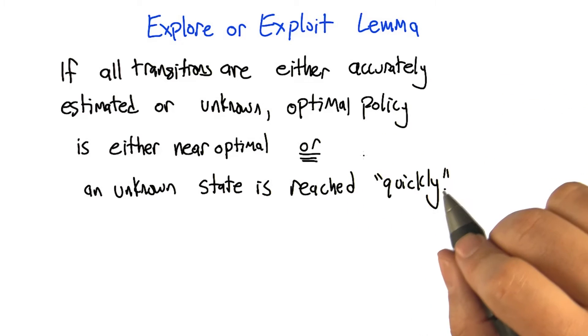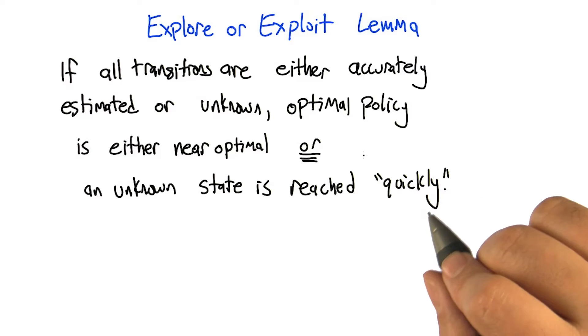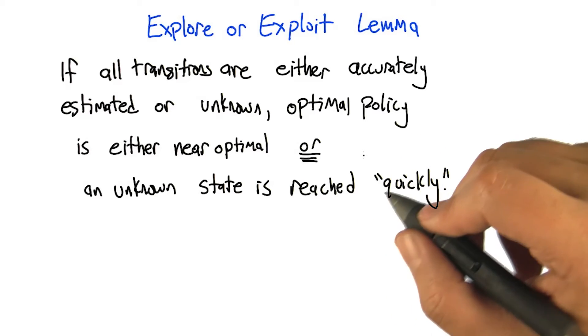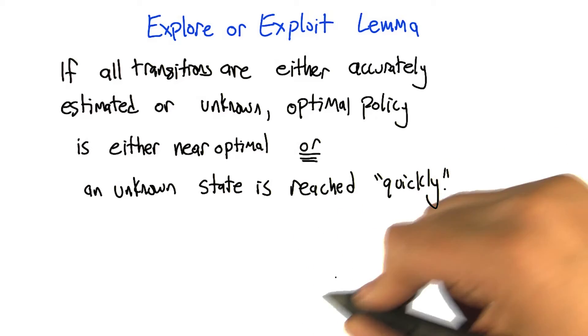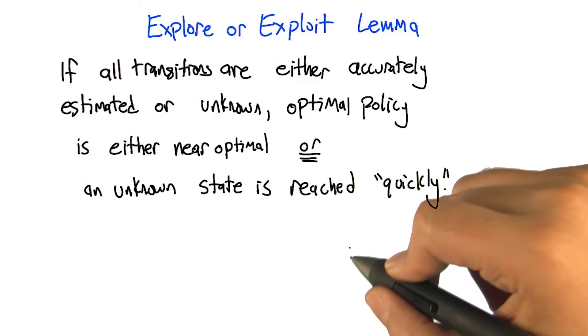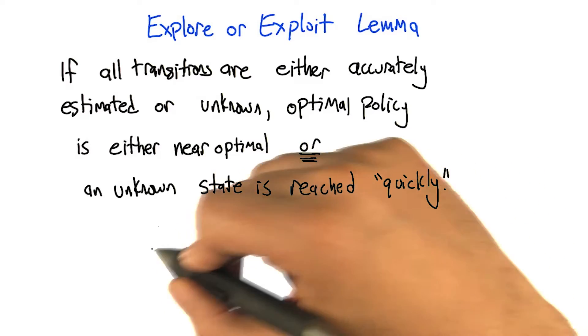So the last little piece to talk about is the explore or exploit lemma. The idea gives us the piece of the argument that we did when we were doing deterministic RMAX, which basically said if we are in some kind of a loop, going around and around, then we're getting optimal reward. If not, then we're going to quickly reach an unknown state and we're going to learn something.